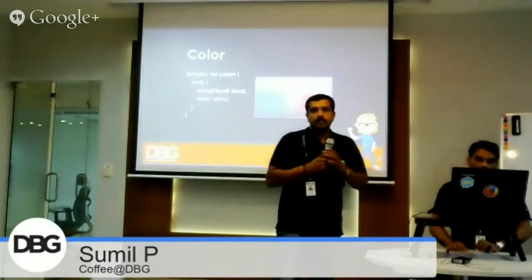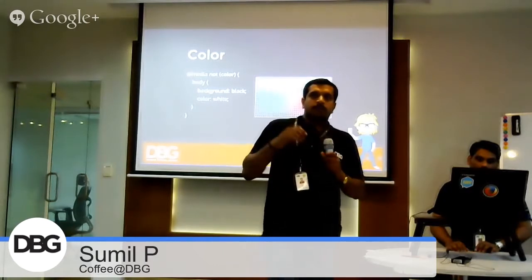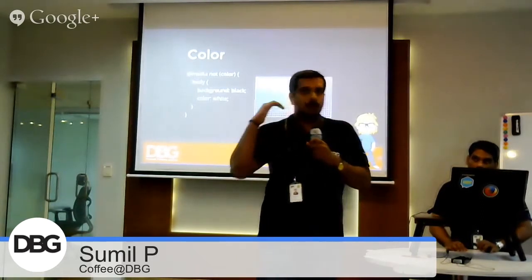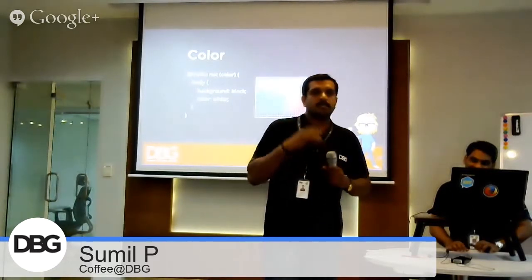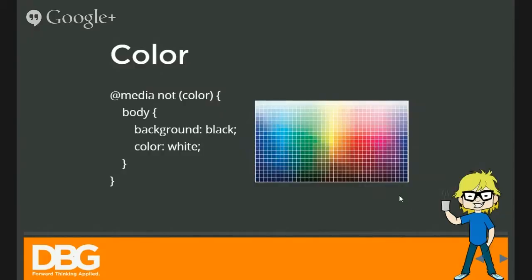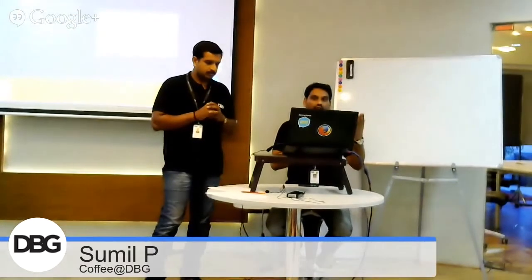Another one — color. The color media feature is used to check compatibility by targeting only non-color devices. If it does not have any color information, the screen is black and white. That's it. If the device is black and white, or color, the appropriate style is applied.